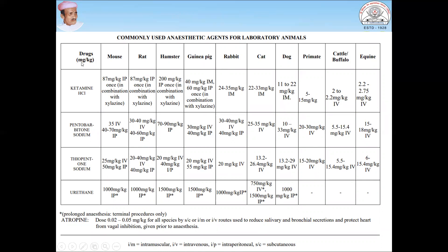These drugs are administered in milligrams per kilogram of animal body weight. Animals used include mouse, rat, hamster, guinea pig, rabbit, cat, dog, primate, cattle, and yukin. Most anesthetic agents produce mucus or respiratory secretion as a side effect. To counter this, atropine should be administered at a dose of 0.02 to 2.5 mg per kg by subcutaneous, intramuscular, or intravenous route to reduce salivary and bronchial secretion.